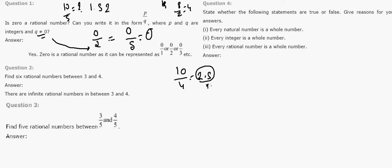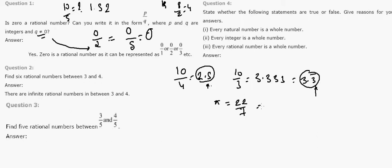If I divide 10 by 3 I get 3.333..., written as 3.3 repeating — that's still rational because the value is repeating. But if you talk about pi, or 22 by 7, it gives 3.1423... and so on with non-repeating digits. Such non-repeating values are irrational. Zero, however, is a rational number.